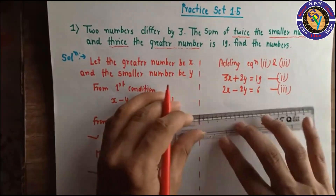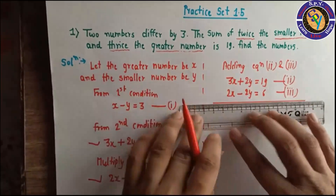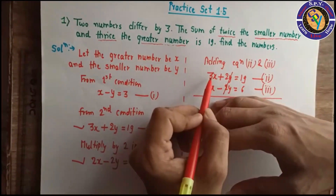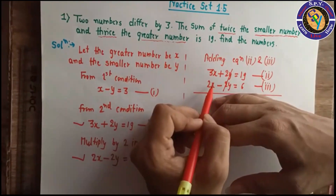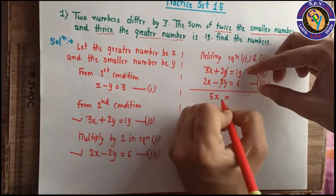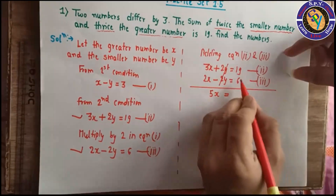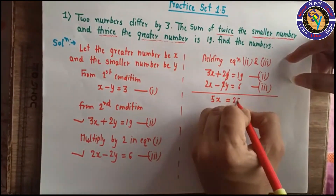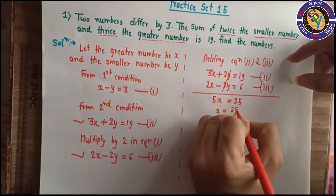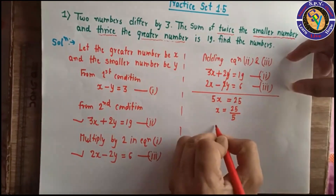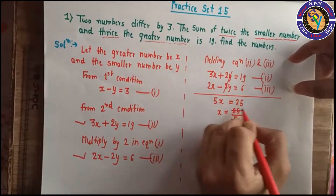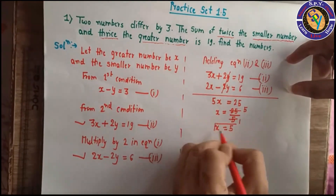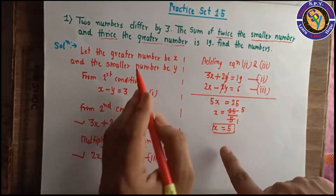Now we solve the equations. Adding equations 2 and 3, the 2y terms cancel. 3x plus 2x equals 5x, and 19 plus 6 equals 25, so 5x equals 25, therefore x equals 5.